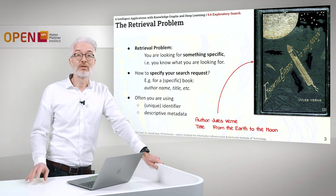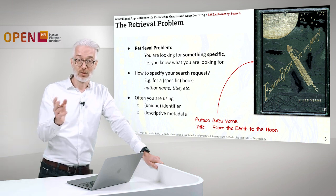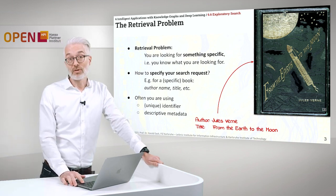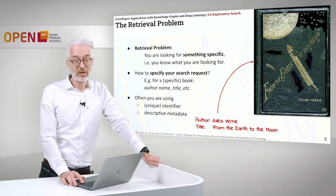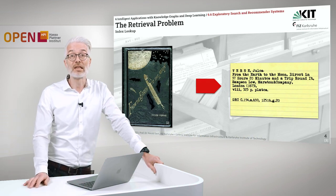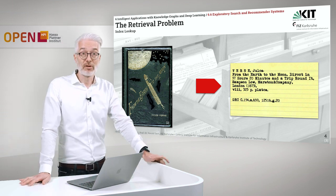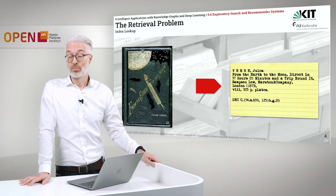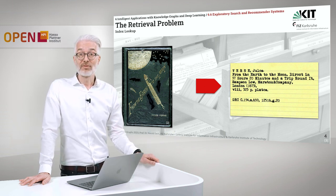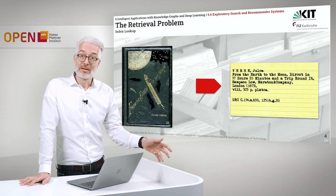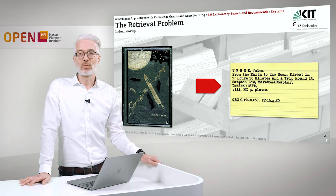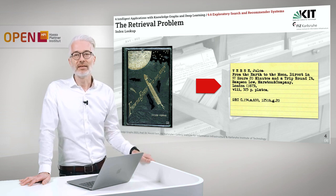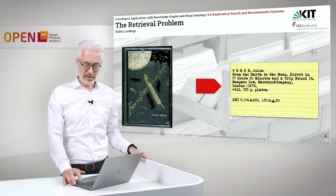Often you are using unique identifiers, like for example Jules Verne as author, or the title and descriptive metadata. What I would do if I go to the library and want to look for a specific book is go to the catalogue, look for the author name, find Jules Verne, and then find 'From the Earth to the Moon' — which has a longer title: 'Direct in 97 Hours 20 Minutes and a Trip Round It' — probably also seeing the first English edition from 1873.